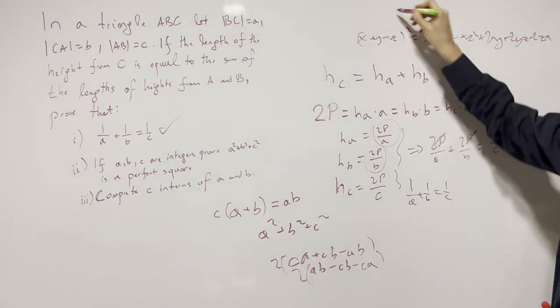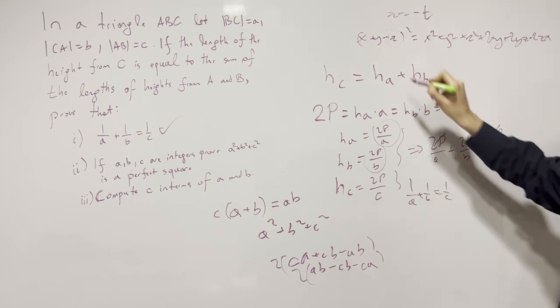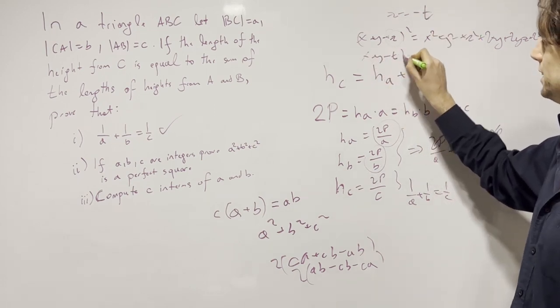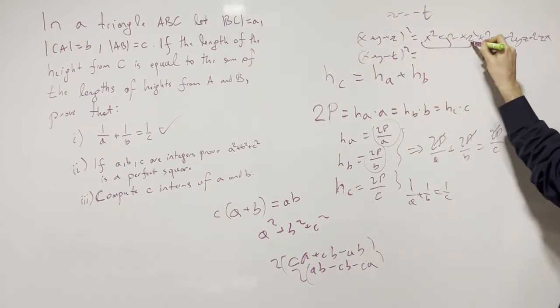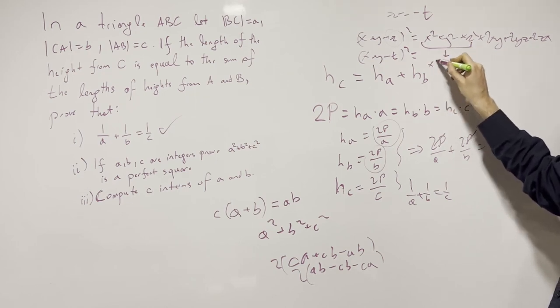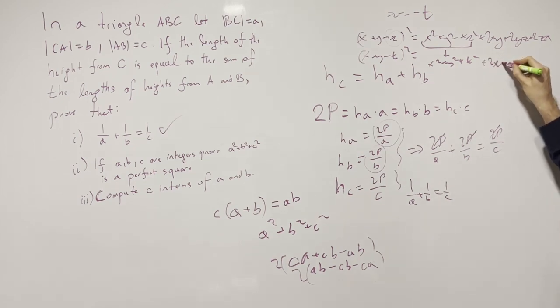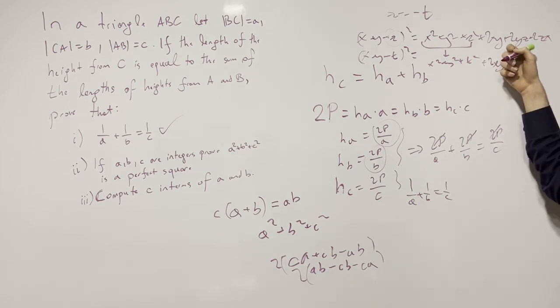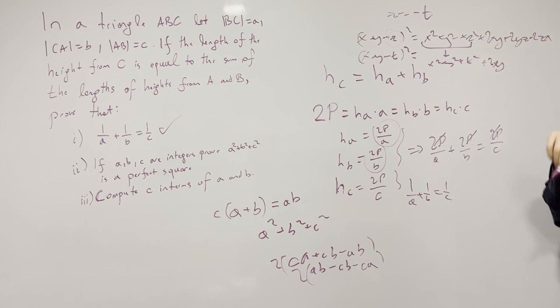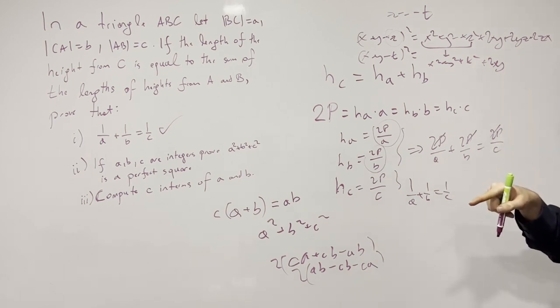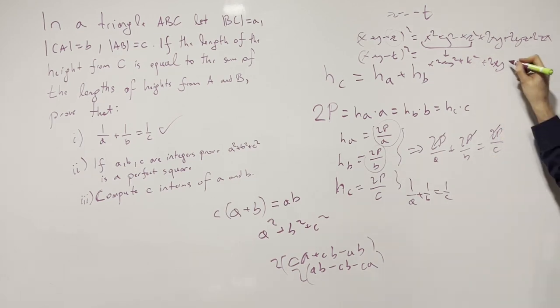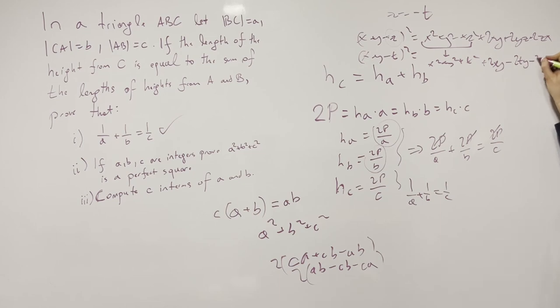Now I ask you instead of Z if Z is equal to negative T then this is X plus Y minus C squared is equal to, this becomes the same it's like X squared plus Y squared plus Z squared. But now we have 2XY is the same but now 2YZ is 2Y times minus T which gives us minus 2TY minus 2TX.